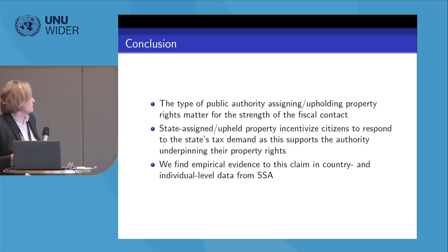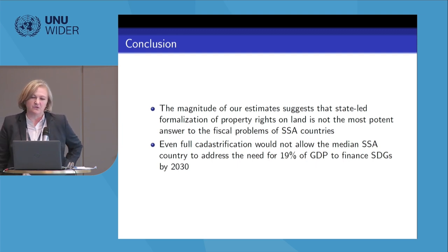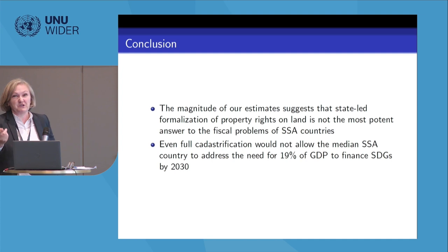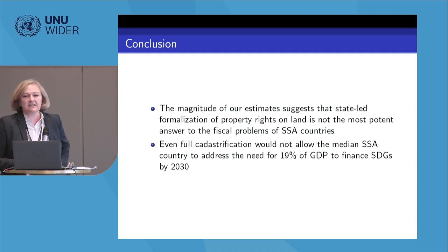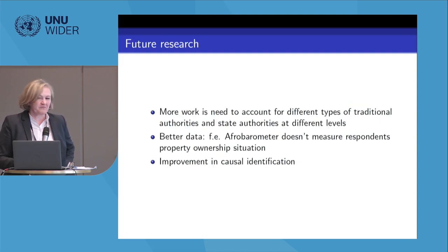We find evidence in both cross-country and individual data. However, the magnitude of our estimates suggests that state-led formalization of property rights is perhaps not the most potent answer to the fiscal problems in the region. Even full cadastrification, as it stands, would not allow the median sub-Saharan African country to address the need of about 19% of GDP to finance sustainable development goals — a gap that is likely even larger now. If we also account for land and property taxation, the results may be more positive, but this is still not a silver bullet.